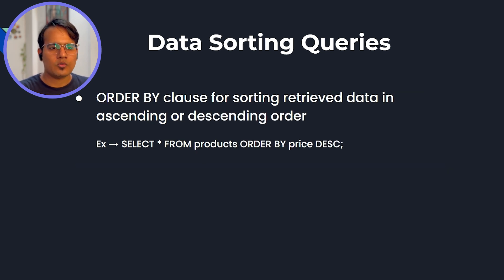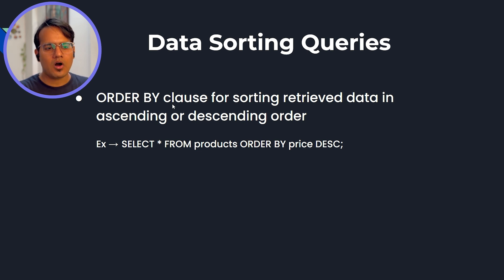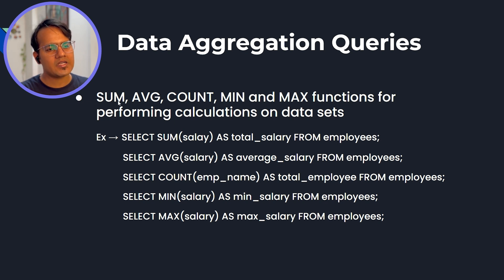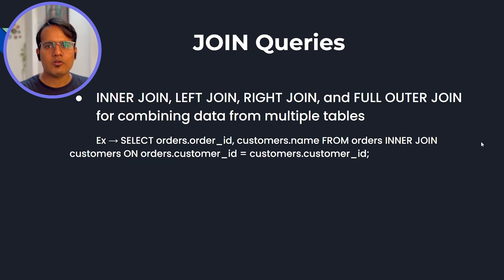Moving to data sorting queries: you should use the ORDER BY clause when you want to order your data based on a certain column. Next, data aggregation queries — in data aggregation we have functions like AVG, COUNT, MIN, and MAX for performing calculations on datasets.